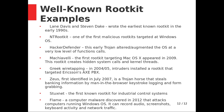Next, the Greek wiretapping scandal of 2004–2005 involved intruders installing a rootkit targeting Ericsson's telephone exchange systems. Then Zeus, first identified in July 2007, is a trojan horse that steals banking information through man-in-the-browser attacks, keystroke logging, and form grabbing. Stuxnet was the first known rootkit for industrial control systems. Finally, Flame, a computer malware discovered in 2012, attacks computers running Windows OS and can record audio, screenshots, keyboard activity, and network traffic.